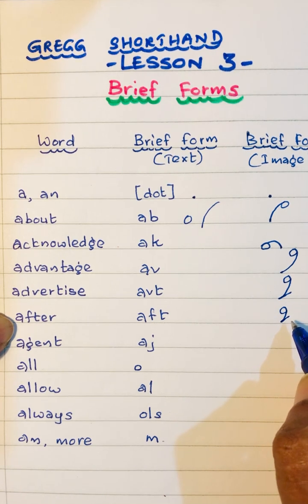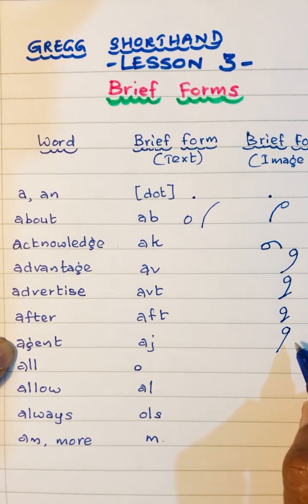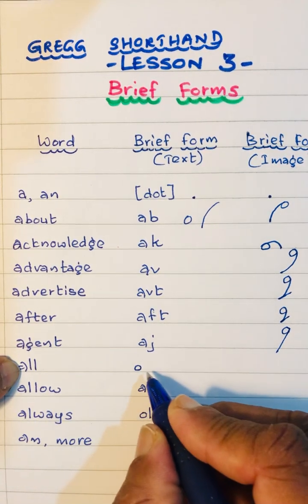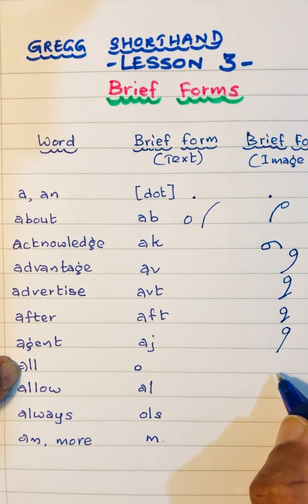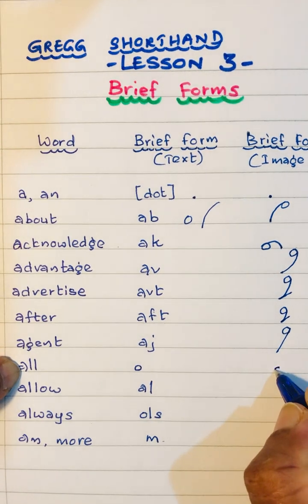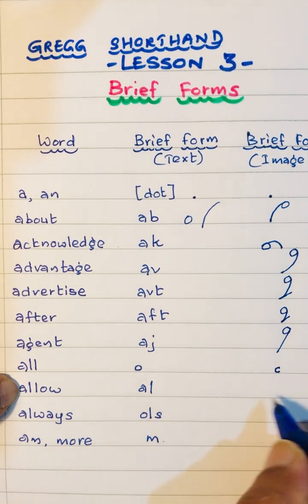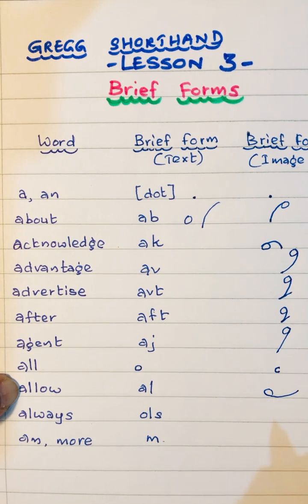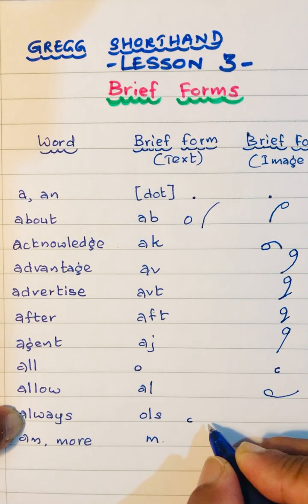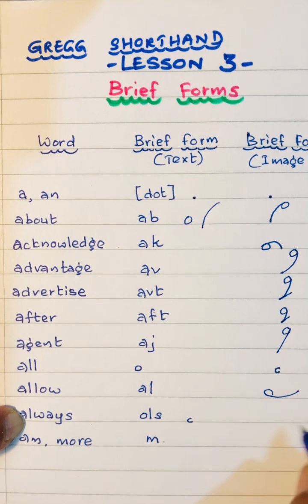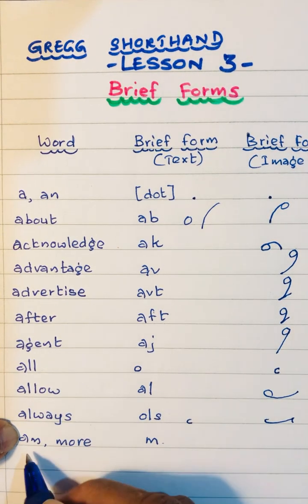'Agent' is a-j. Then 'all' — the 'aw' sound is full, so 'all' is a-o-l. 'Always' is o-l-s, always — a-o-l-s. In my previous lesson we also discussed this.